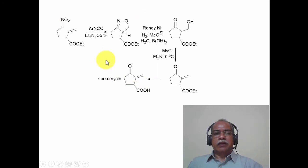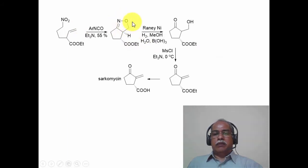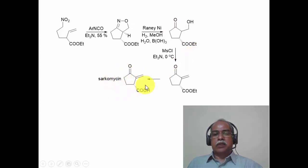Another example of a nitrile oxide cycloaddition reaction is shown here. This nitro derivative reacts with phenyl isocyanate to produce the corresponding nitrile oxide, which undergoes cycloaddition with a vinyl derivative to produce the isoxazoline. Reductive cleavage of the nitrogen–oxygen bond produces the iminol, and the imine is hydrolyzed to the corresponding ketone. This constitutes the synthesis of sarcomycin, which is the particular structure shown here.